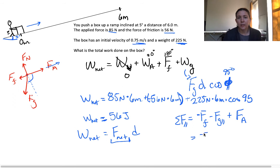So we have our forces up here. The force of friction is negative 56 newtons, minus Fg parallel, which is 225 sine theta, plus the applied force of 85 newtons.